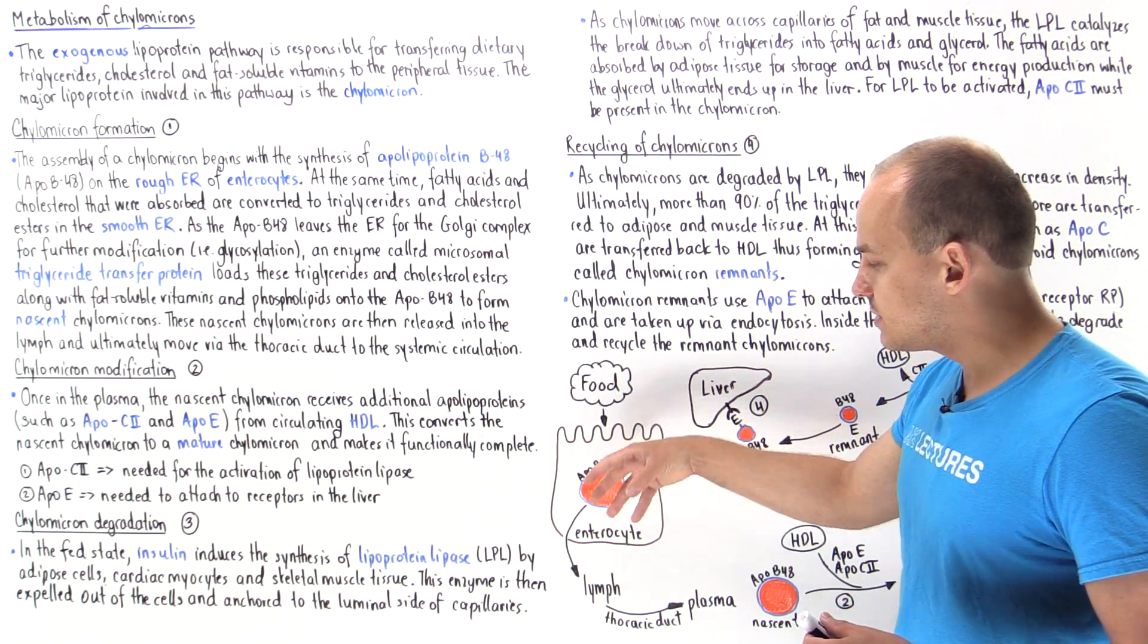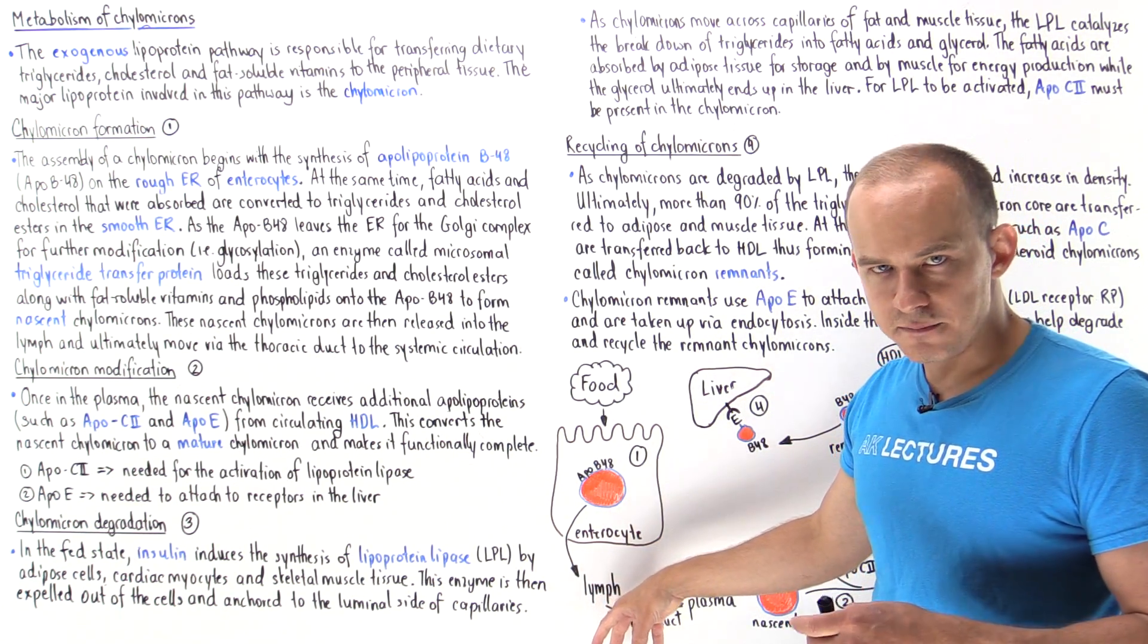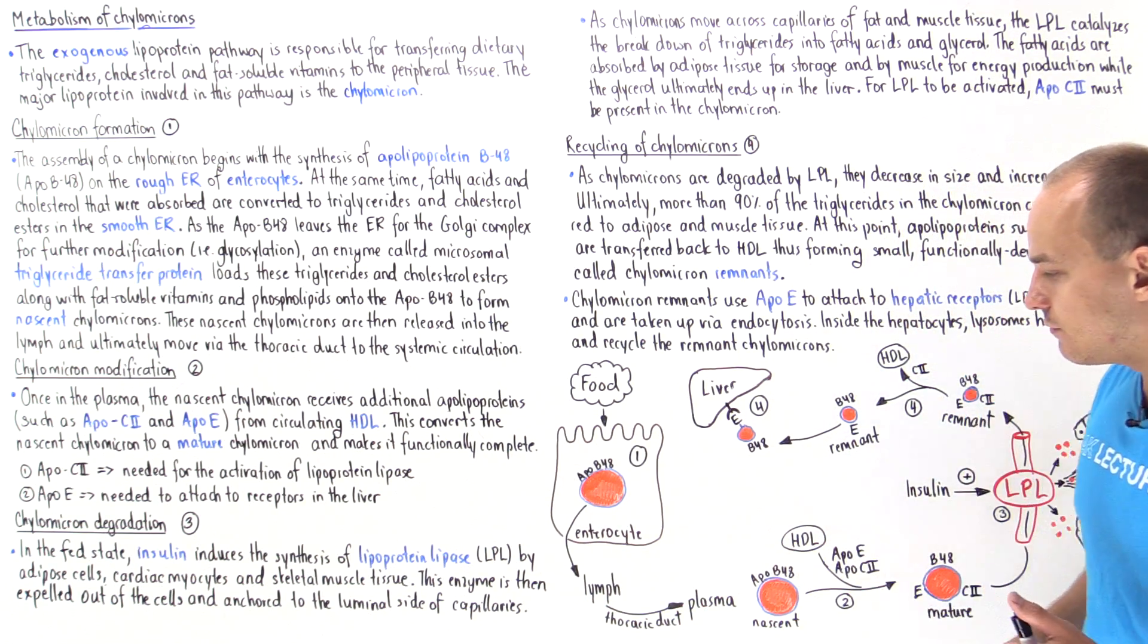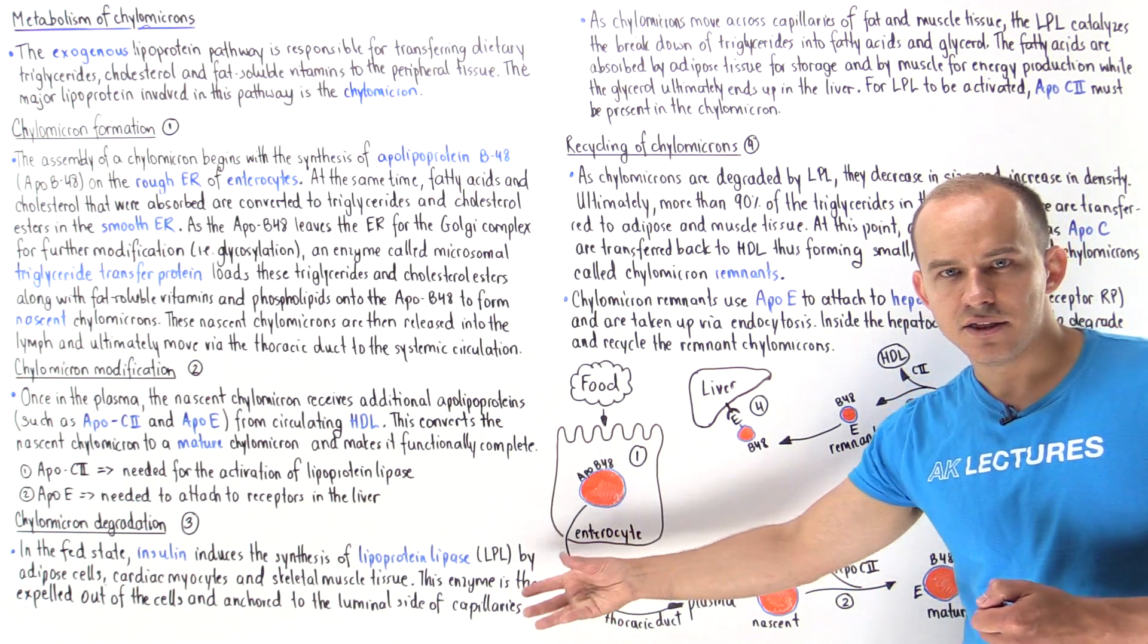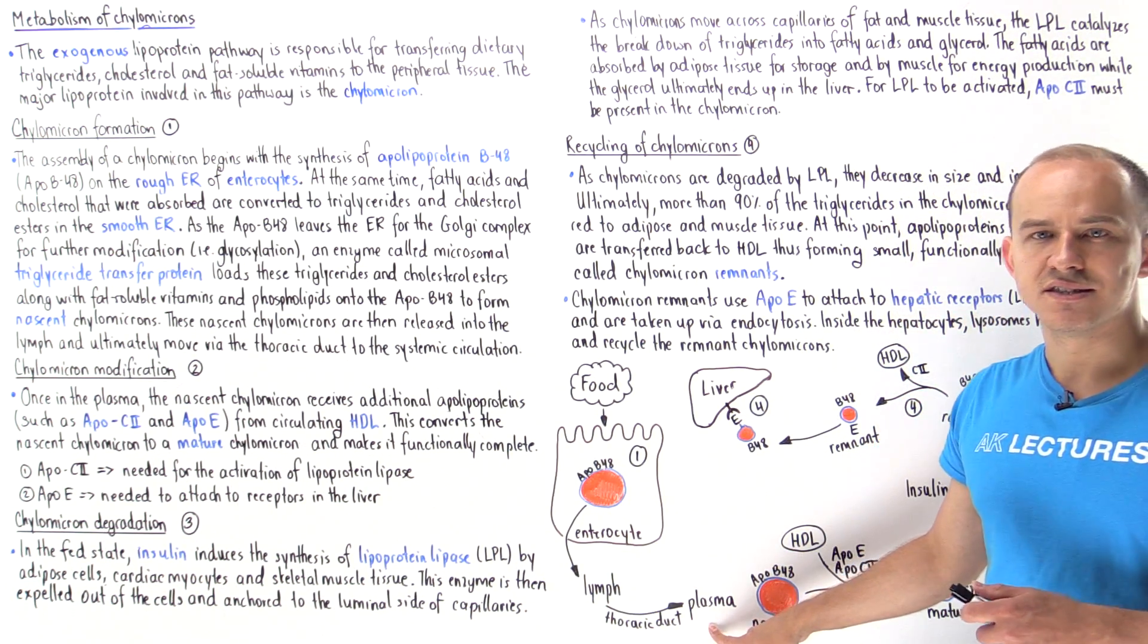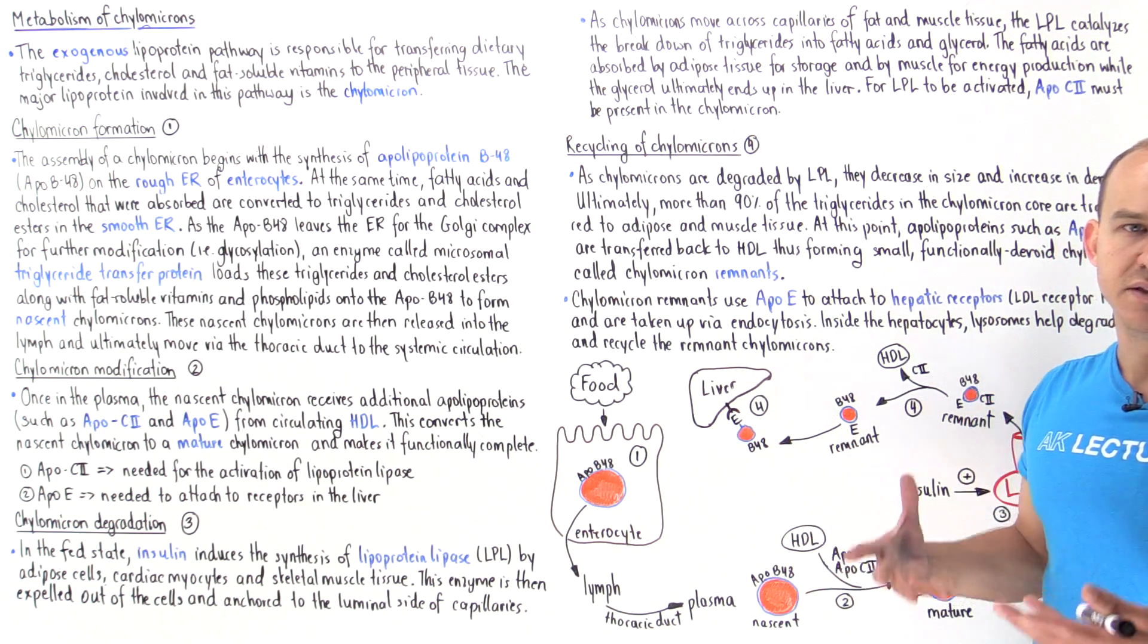Then this is released into the nearby lymph vessels, and that ultimately travels to the thoracic duct which empties out into the systemic circulation. So it ends up in the plasma.